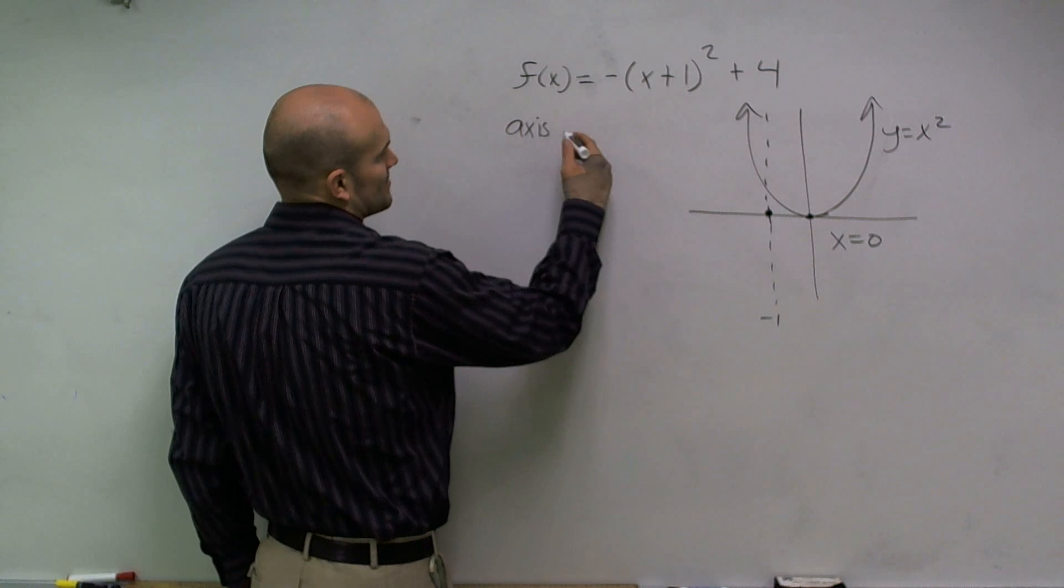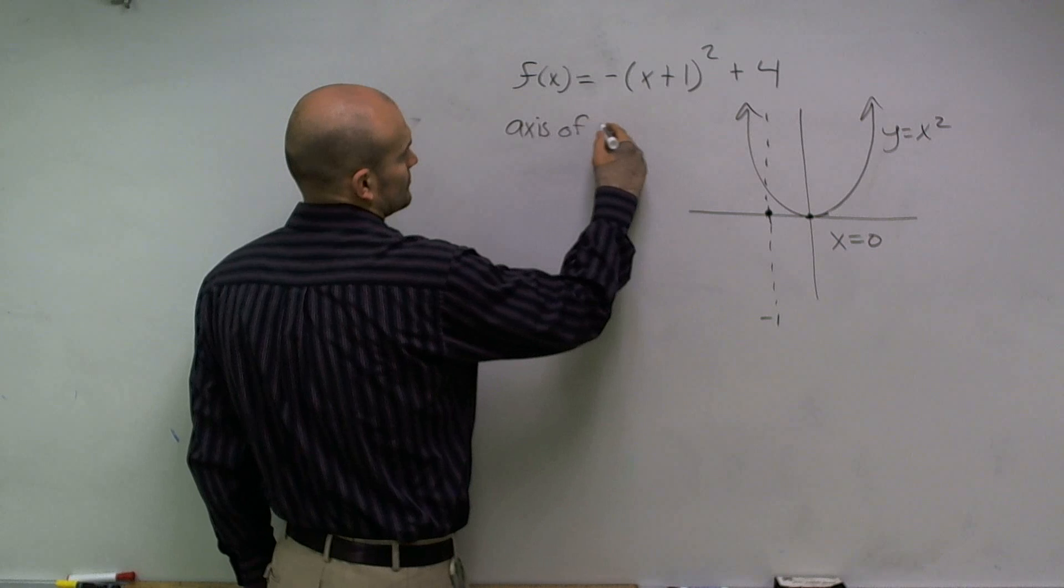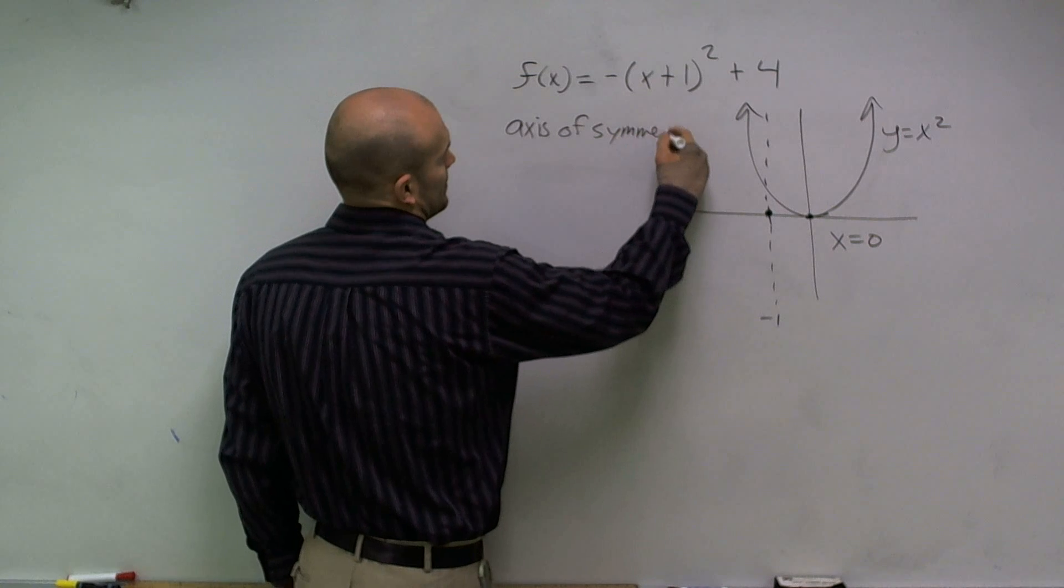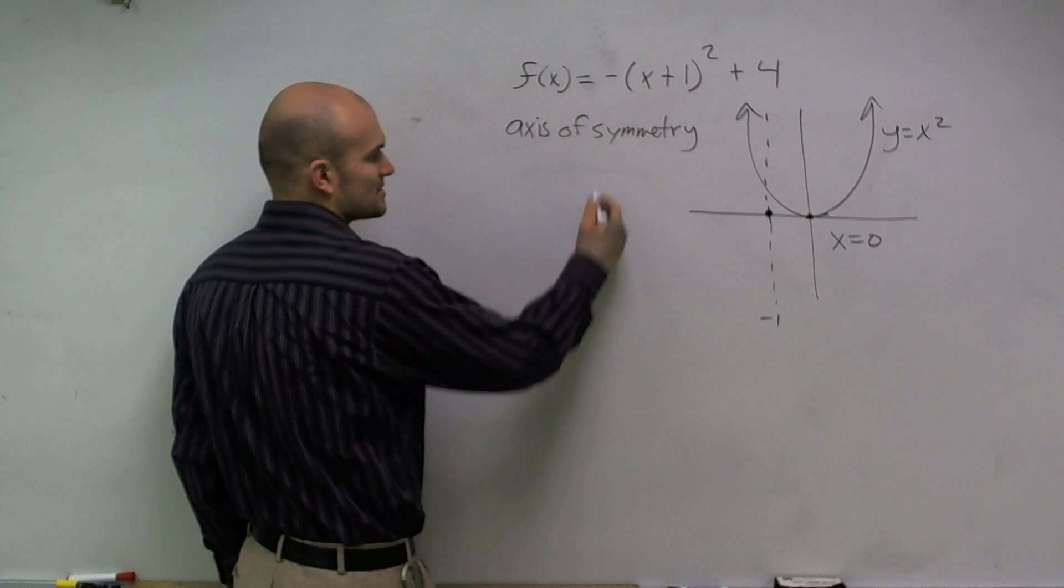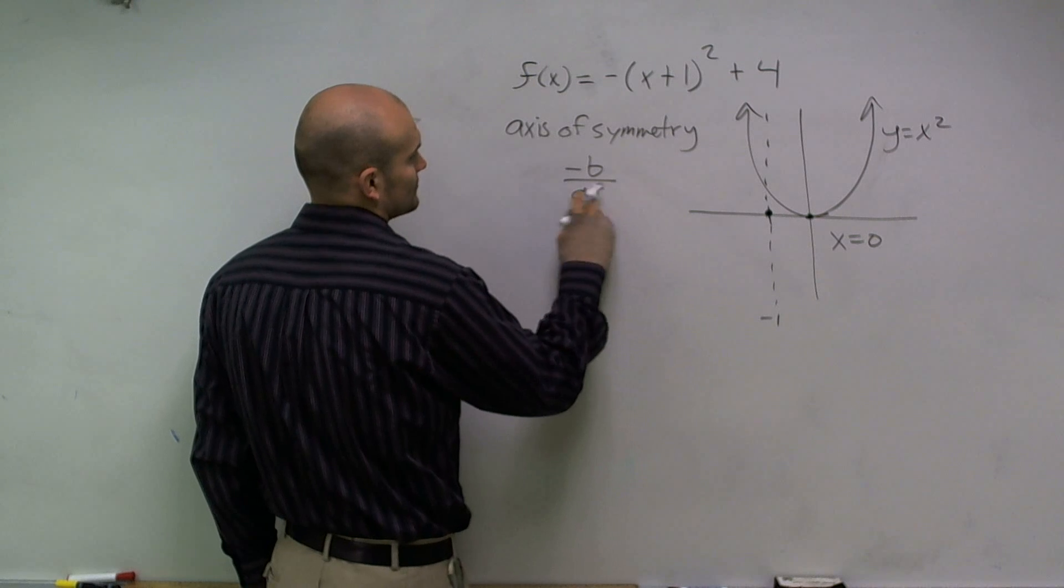There is a formula for the axis of symmetry. And the formula for the axis of symmetry is negative b over 2a.